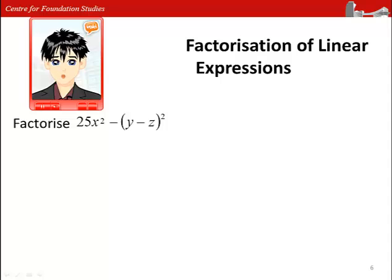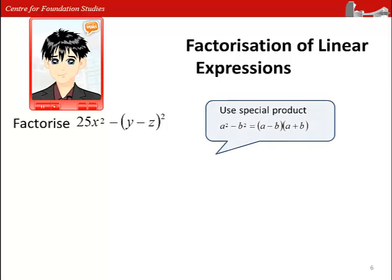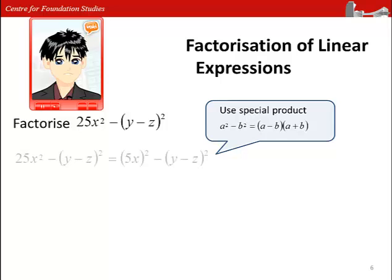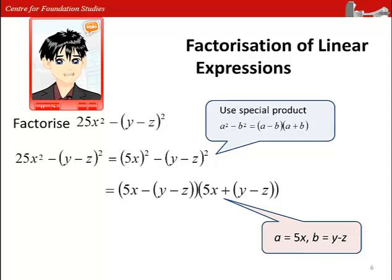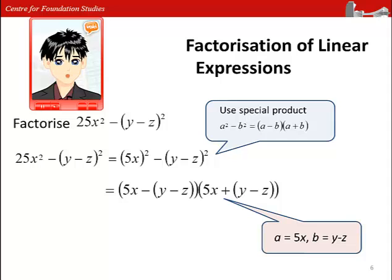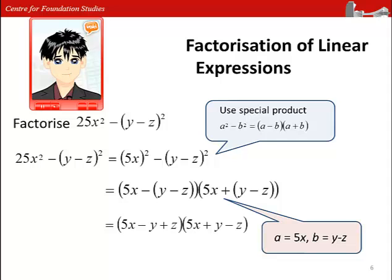Factorize 25x² - (y - z)². By using this special product, we can write it in the form (5x)² - (y - z)². From this expression, we can see that a = 5x and b = (y - z). Hence, we open the inner brackets and the expression can be simplified into (5x - y + z)(5x + y - z).